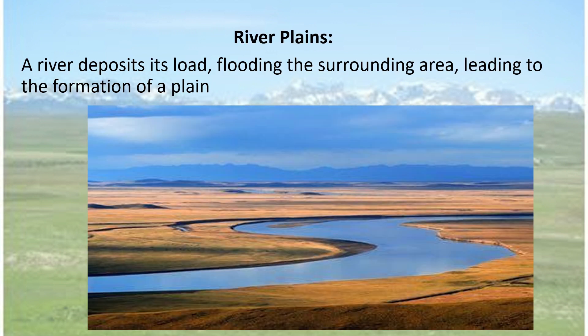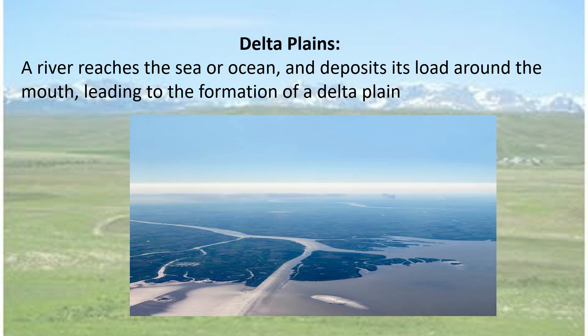As explained earlier, when a river deposits its load and floods the surrounding area, it leads to the formation of a river plain. Again, when the river takes its load and reaches the sea or ocean, it drops all its mud and silt into the ocean or the sea. Then the river cannot flow straight — it starts cutting through the load of mud and sand and silt. When this happens, this new land that has been formed is divided into many different parts, forming a delta at the mouth of the river. This is called a delta plain.